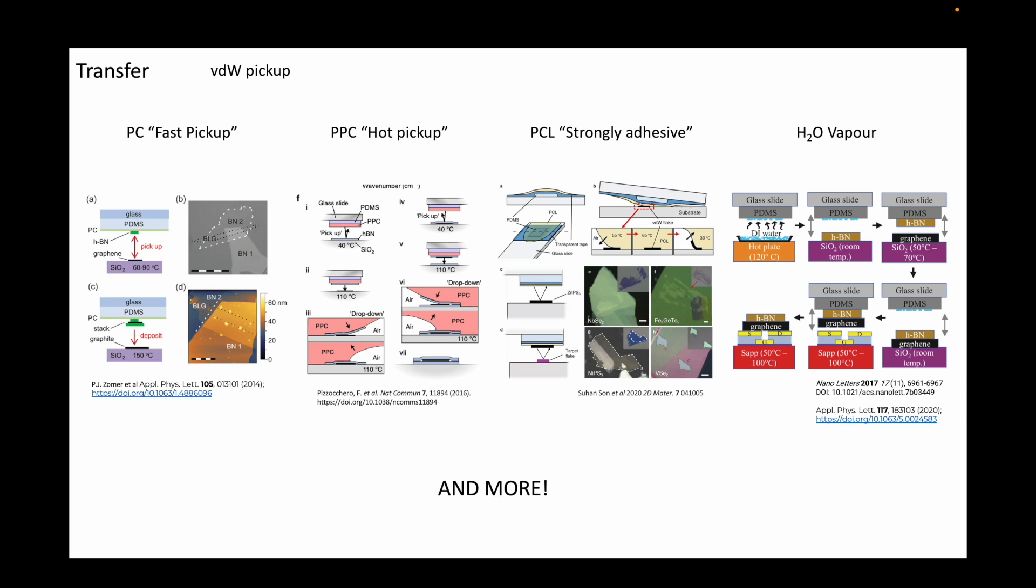The biggest differences between them are the adhesion properties and the working temperatures. The first van der Waals layer is picked up by bringing the sample temperature close to the glass transition temperature of the polymer.